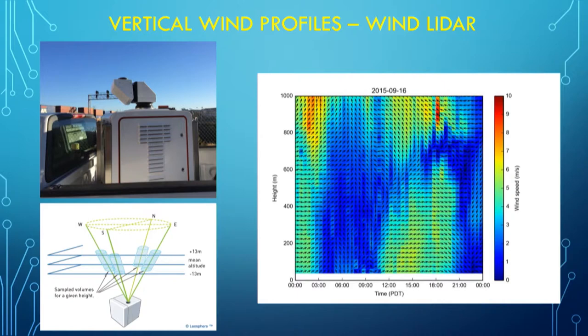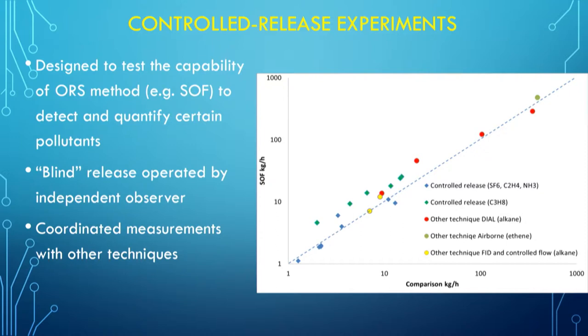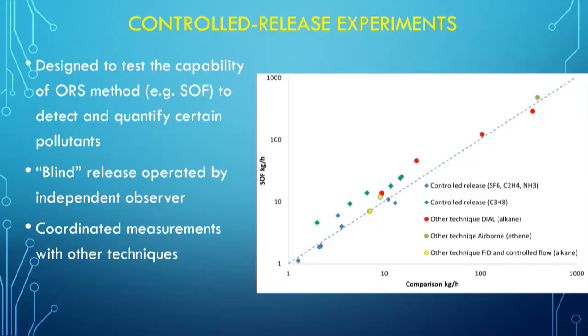To elaborate on the accuracy and precision of the method, the way to validate and verify the approach is to use a controlled release experiment. Over the last 10 to 15 years, many optical remote sensing contractors have been conducting these experiments — you release a known quantity of your target compound, usually in a blind test to quantify what your emission rate is, and then compare it with the true emission rate. Here is an example of a variety of controlled release experiments done by FluxSense with different gases, also compared with other techniques.